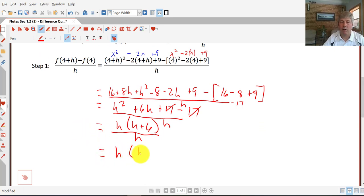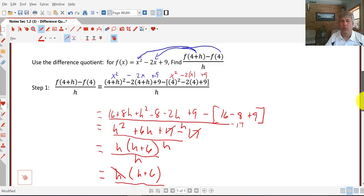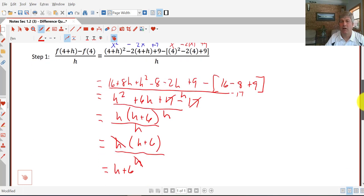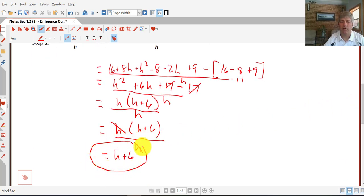We have h times h plus 6 all over h. All I did was rewrite the previous step. Our h is canceled, and our final answer here is h plus 6. We have used the difference quotient to find f of 4 plus h minus f of 4 over h. Our final answer is h plus 6.